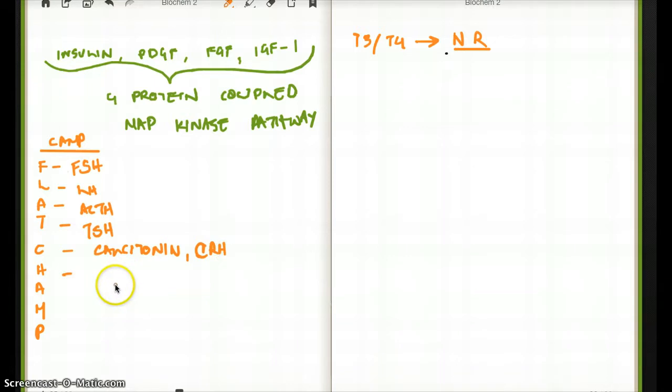H is going to be HCG. That's the one I tend to forget. A is going to be for ADH, but which one? It's a V2 one, not V1. Only V2 is going to be cAMP.